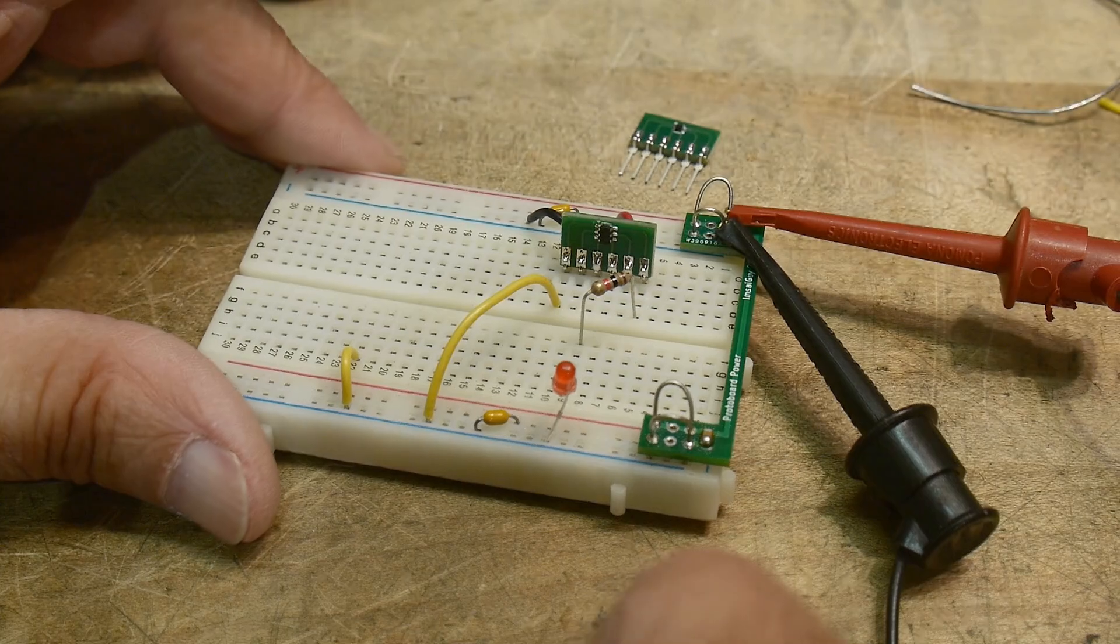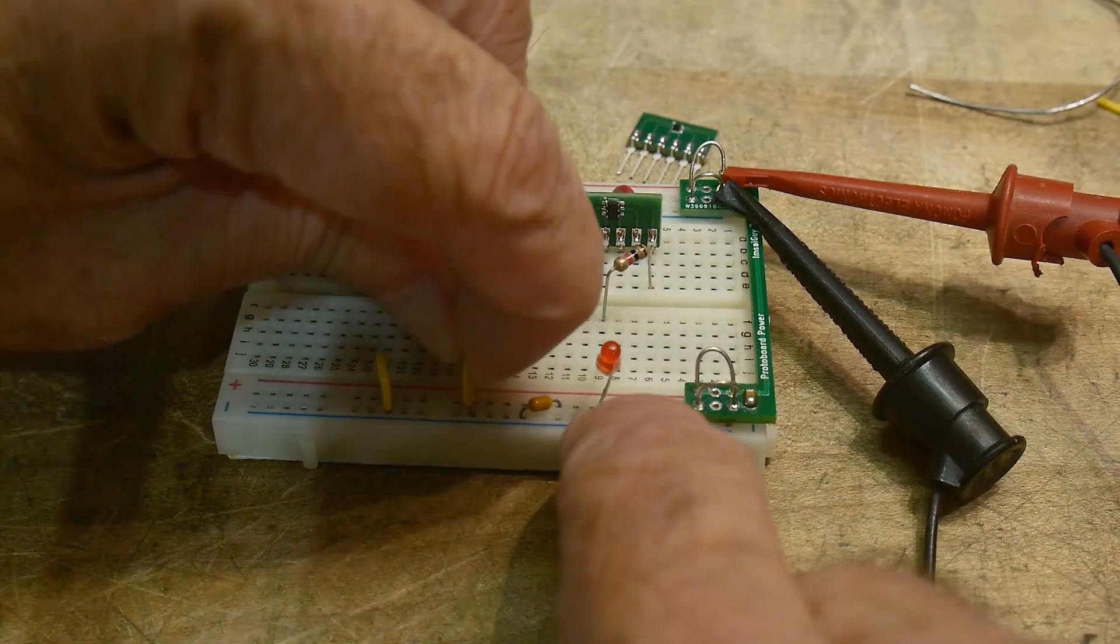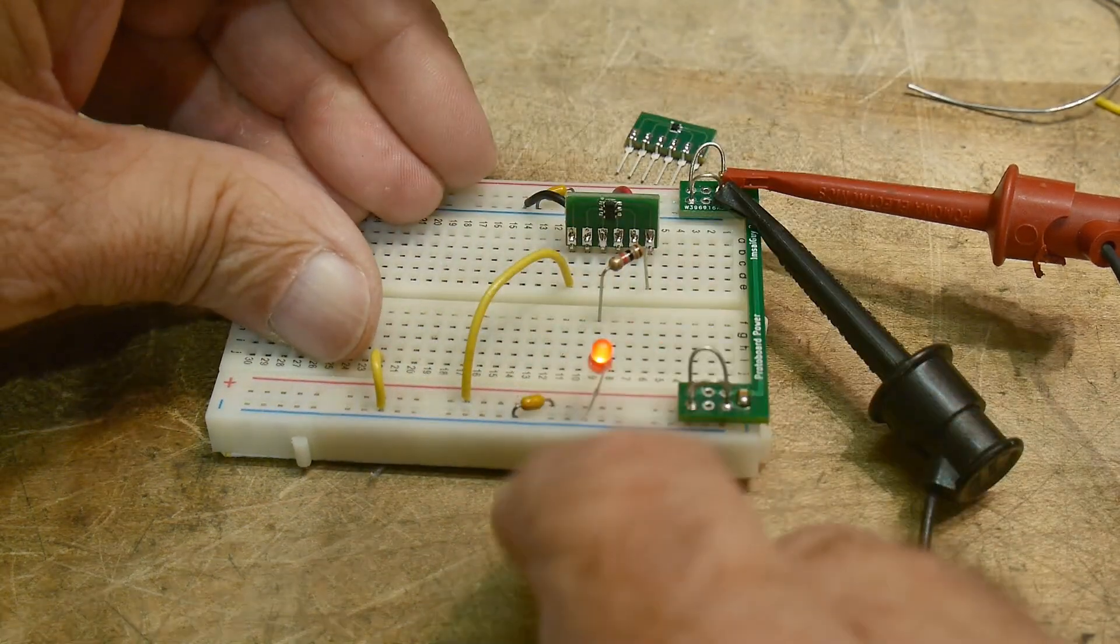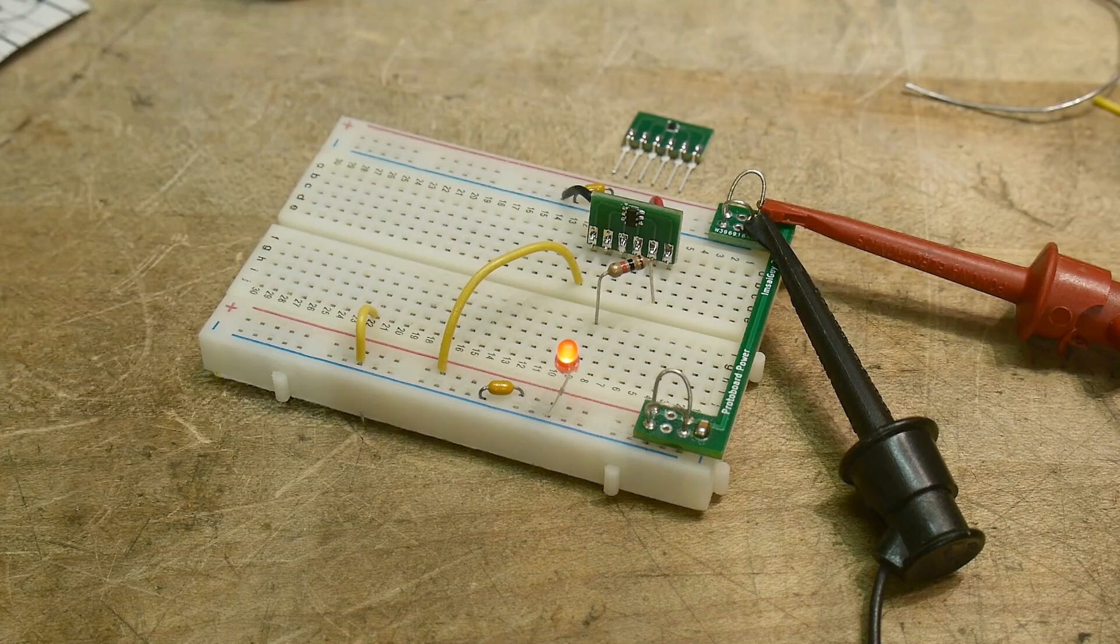Alright, so I've rewired this one for the correct voltages, and if we have a low going in, we have a low going out, got a high going in, we got a high going out, and we have two gates, so we could do two different things. So there you go.